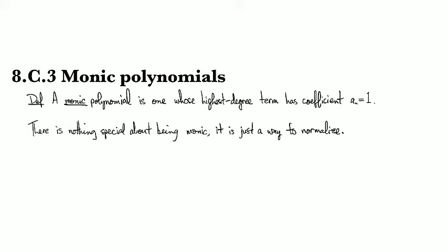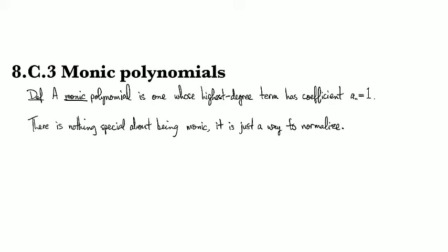Okay, so in this clip we're going to look at monic polynomials, and a monic polynomial is just one whose highest degree term has coefficient 1. So there's actually really nothing interesting about this. It's just a handy way to normalize. It's just like saying, if we're going to deal with eigenvectors, let's take an eigenvector that's a unit vector, because it'll make life easier when we do something later.